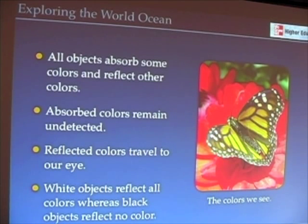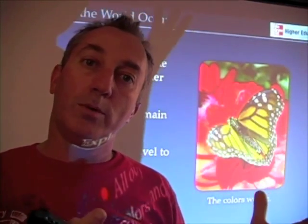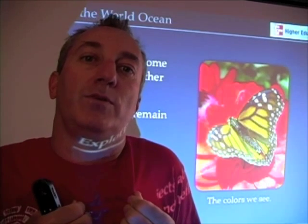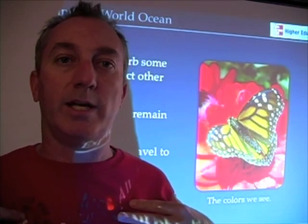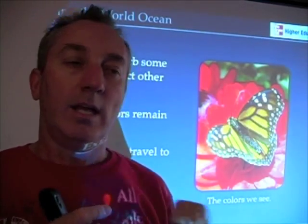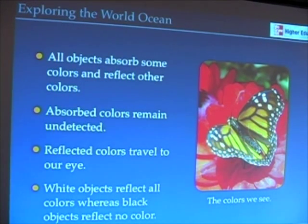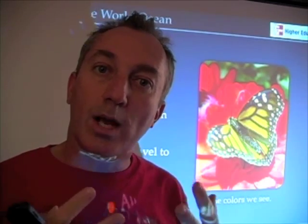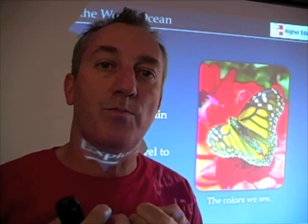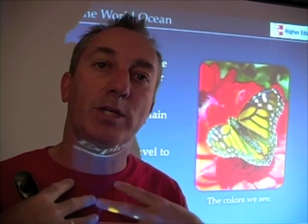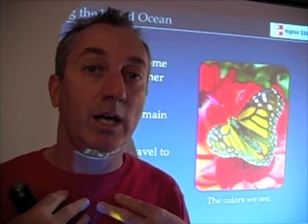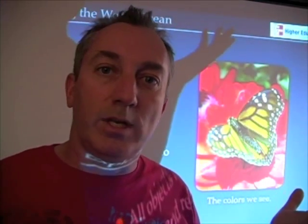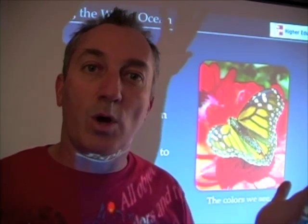When we see something, what we're seeing is its ability to absorb or reflect certain colors. My red shirt, for example, is absorbing all colors of the visible light spectrum except red — that's why it looks red. A butterfly with its orange wings is absorbing all colors except orange. Black is the absence of color, meaning a black object is absorbing all colors. That's why black objects heat up faster — they're absorbing all that electromagnetic radiation impinging on that surface. A black car is a lot hotter than a white car.